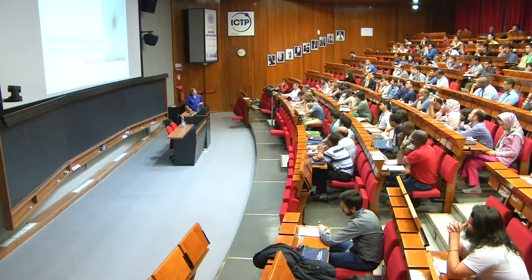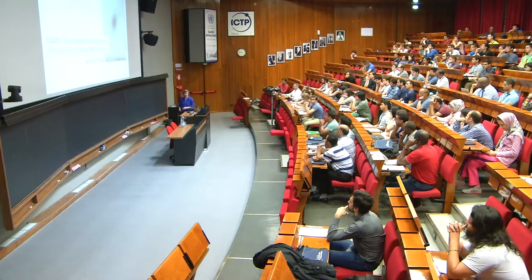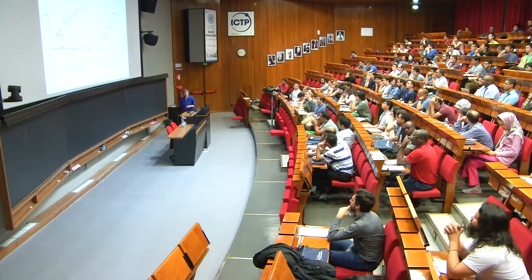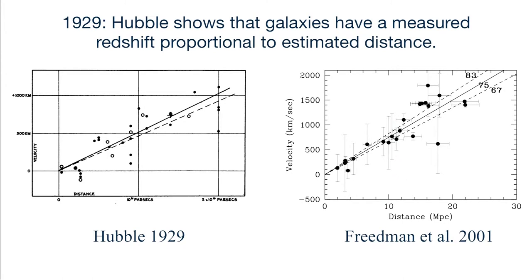Hubble now had a tool — a standard candle he could use to estimate distances to galaxies. By 1929 he published a famous paper with not merely measured redshifts but also distance estimates. In the plot from his 1929 paper, the horizontal axis shows distance from 0 to 2 megaparsecs and the vertical axis shows radial velocity from 0 to 1,000 kilometers per second. The two diagonal lines are his best fits to the data using different weighting schemes. He showed that not only is there an excess of redshifts over blueshifts, but the blueshifted galaxies are relatively close to us, and as you go further away the redshifts are larger and larger.